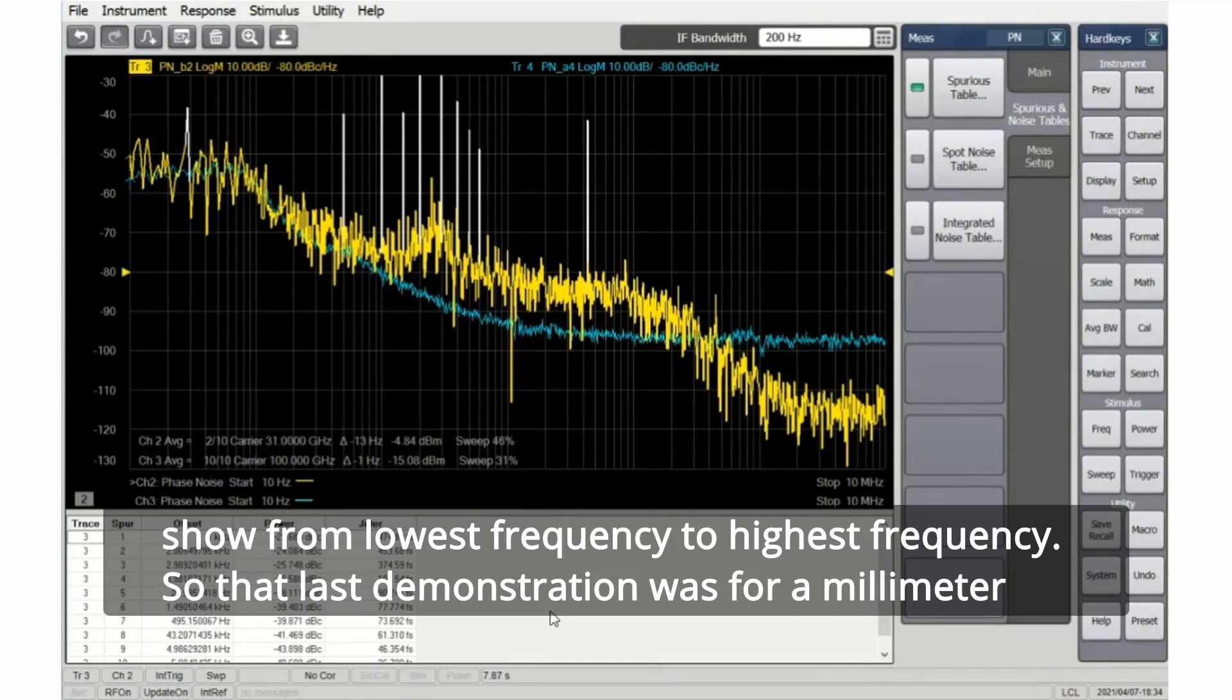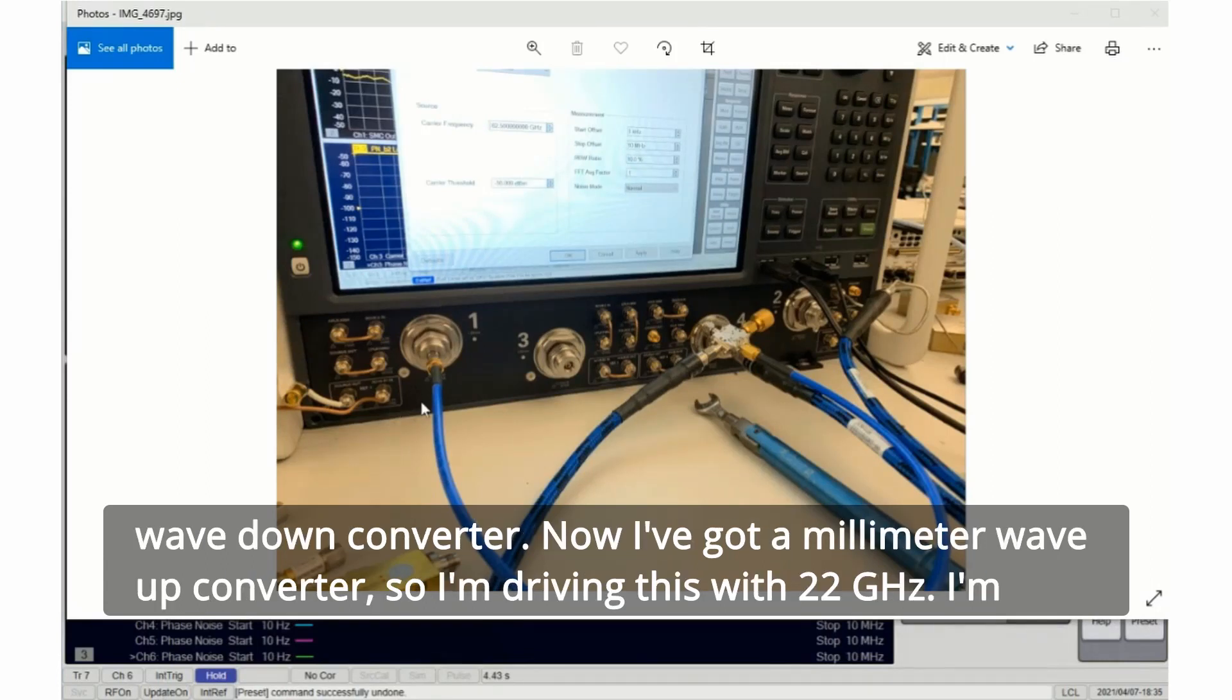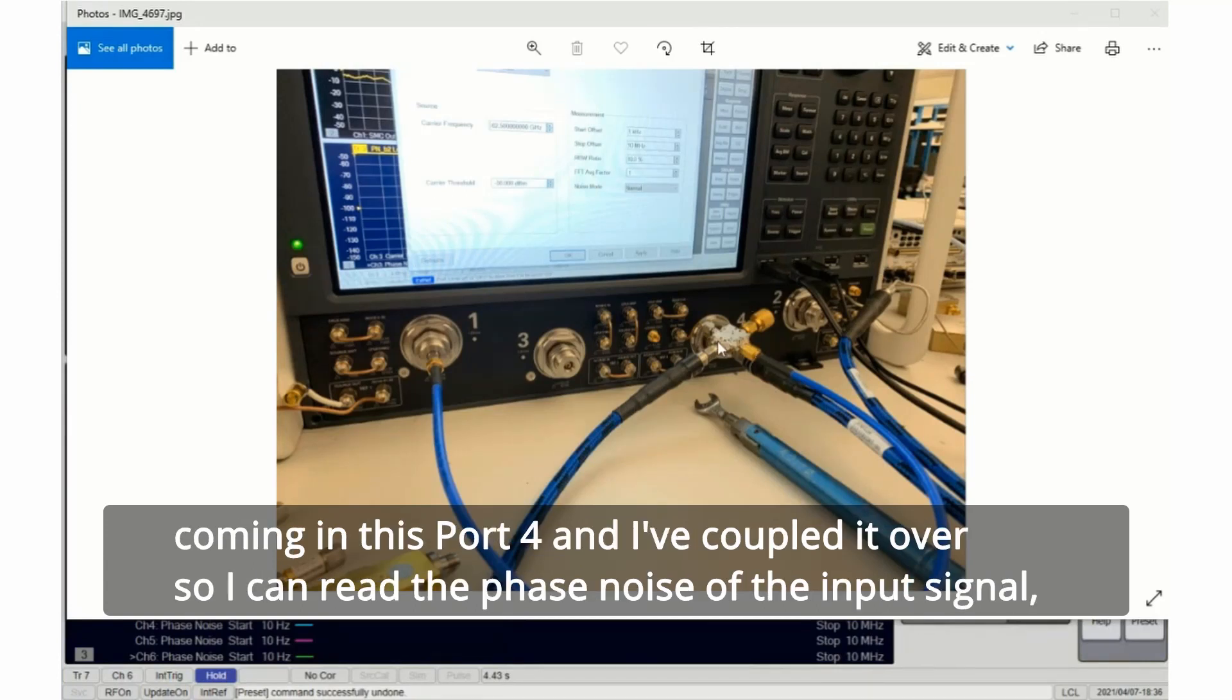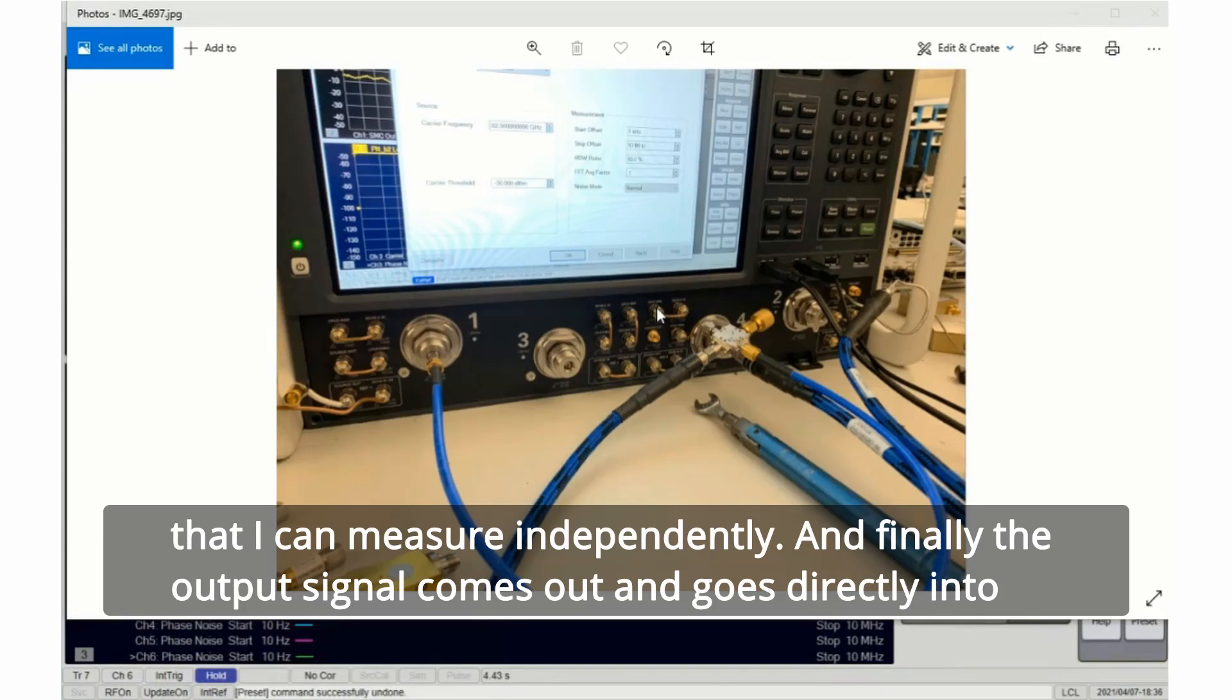That last demonstration was for a millimeter wave down converter. Now I've got a millimeter wave up converter. I'm driving this with 22 gigahertz. I'm using a local oscillator - it's a little difficult to see here - but the local oscillator is actually coming in this port 4 and I've coupled it over so I can read the phase noise of the input signal. That's coming from that PSG I previously measured, so I know it has a phase noise profile that I can measure independently.